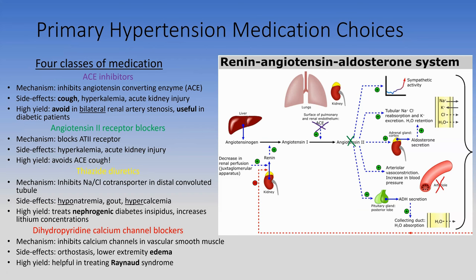Avoid ACE inhibitors in bilateral renal artery stenosis—these patients depend on angiotensin 2's effect on the efferent arteriole for glomerular perfusion. In unilateral renal artery stenosis, ACE inhibitors can be used and are also useful in diabetic patients to limit excess filtration. ARBs work similarly but block angiotensin 2's direct effects rather than its production, so angiotensin 1 is still converted to 2—meaning no bradykinin buildup and no cough. Switch a patient with ACE-induced cough to an ARB.